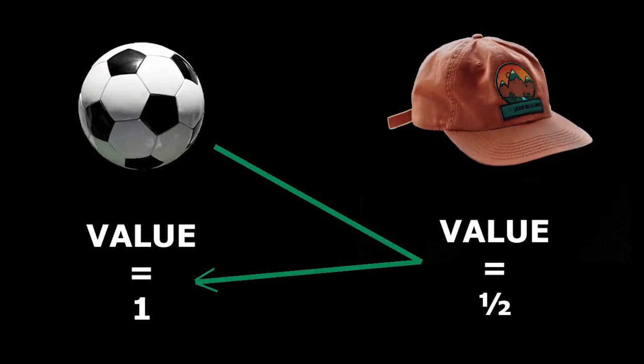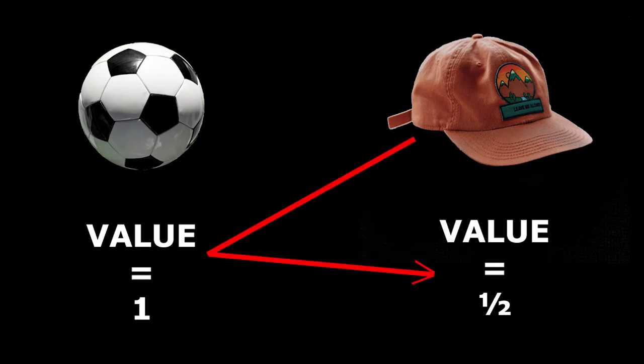However, it's only because we can compare their relationship to each other that we can express their worth. If we were to remove the football from our example, the hat would have nothing to be compared against. Its value would essentially be one — or technically zero — not half, because it would no longer be able to express its worth in relation to any other commodities. It's only this reflection of one commodity's comparison to another that we can express their relative worth and relative value.